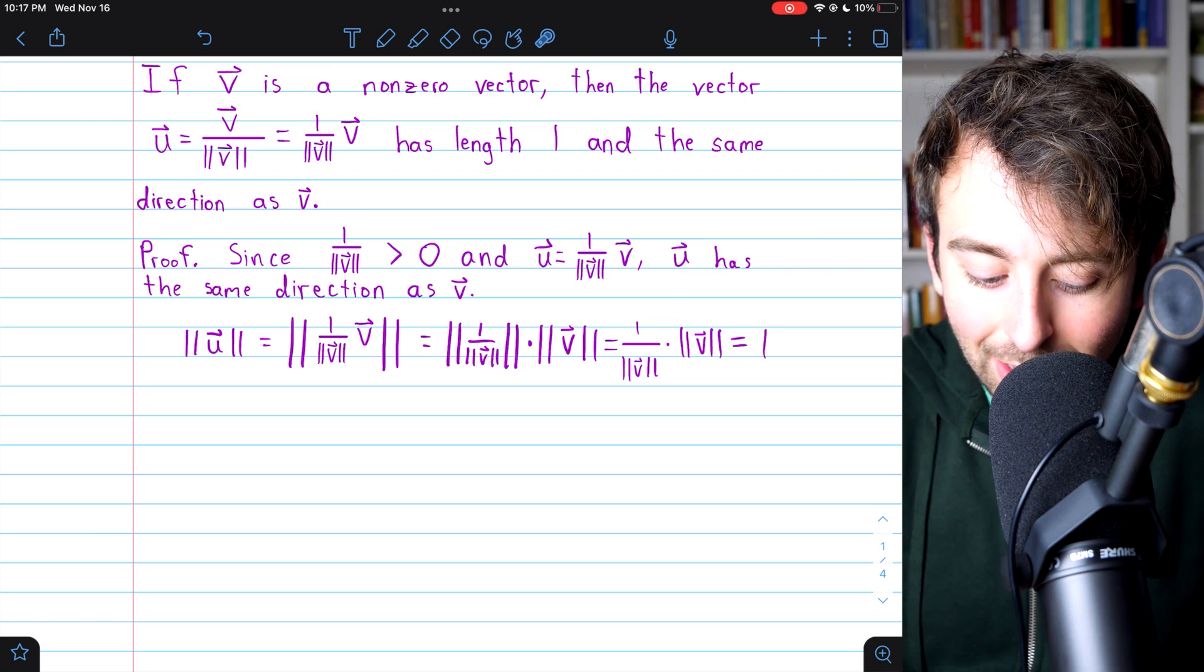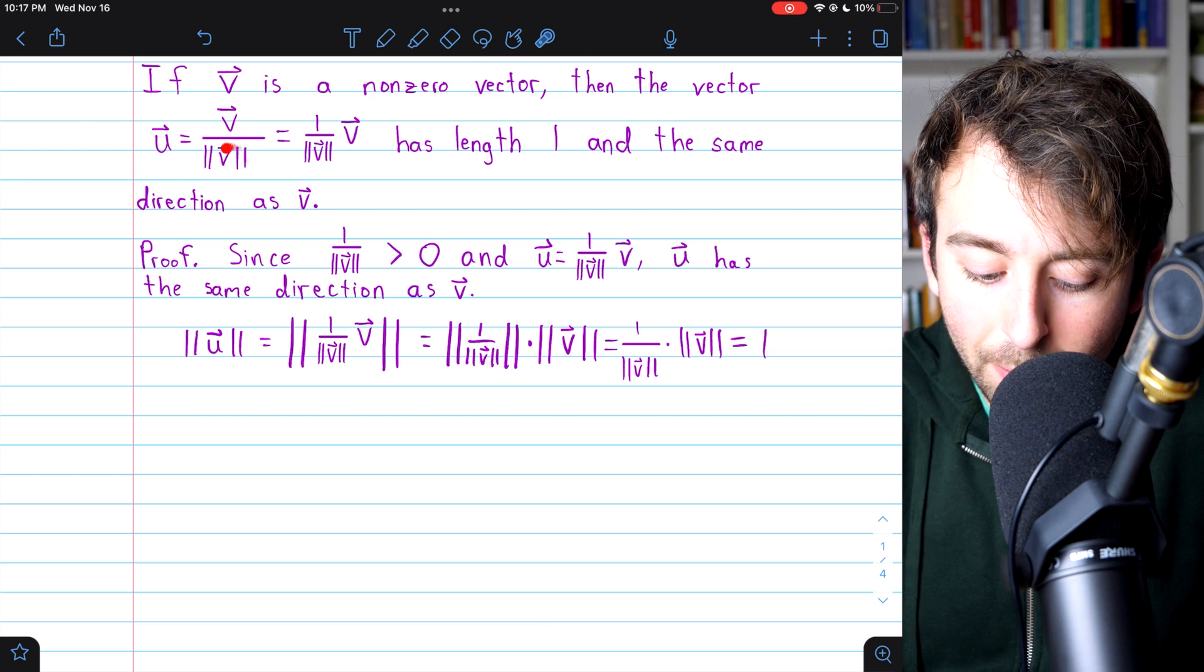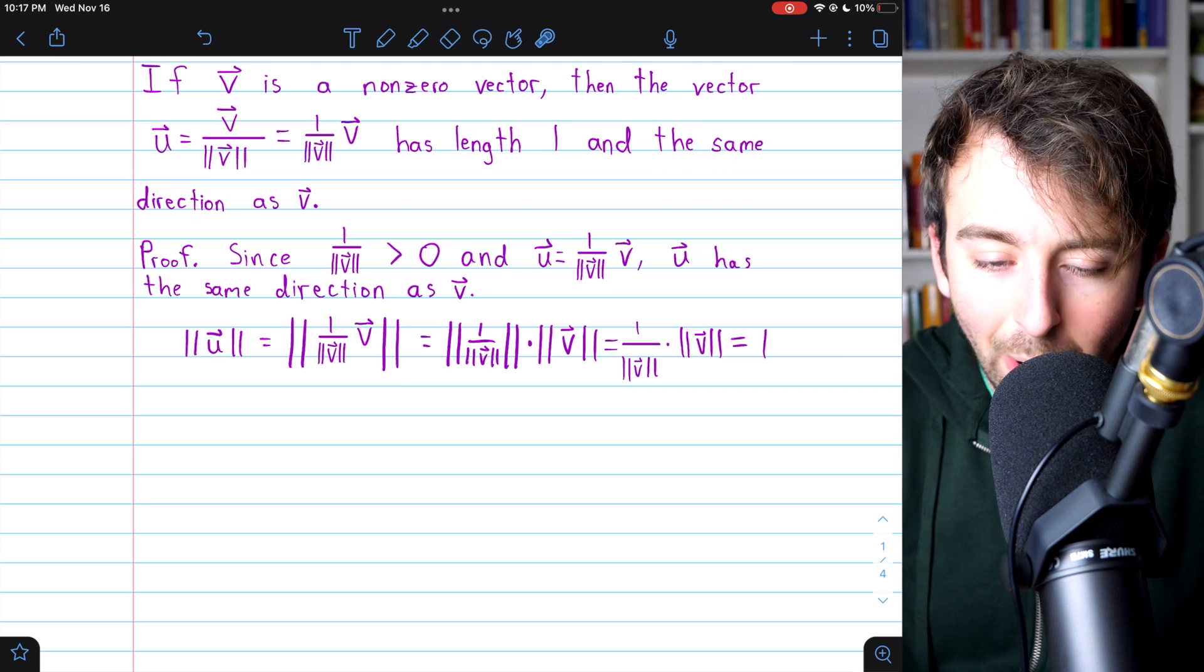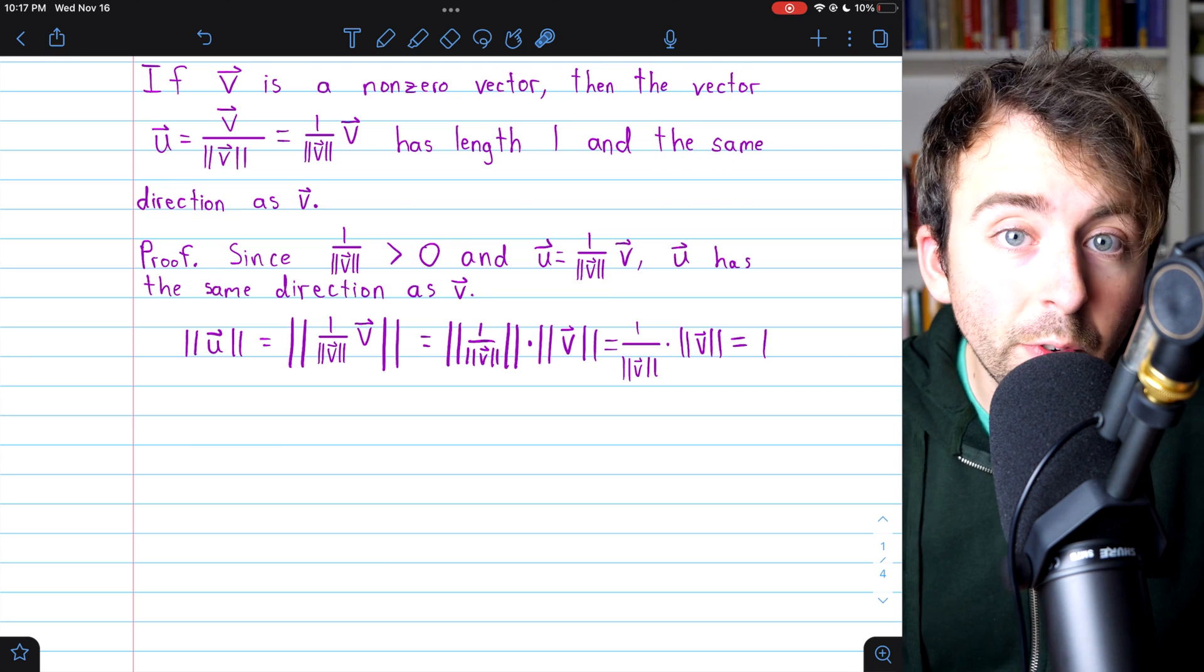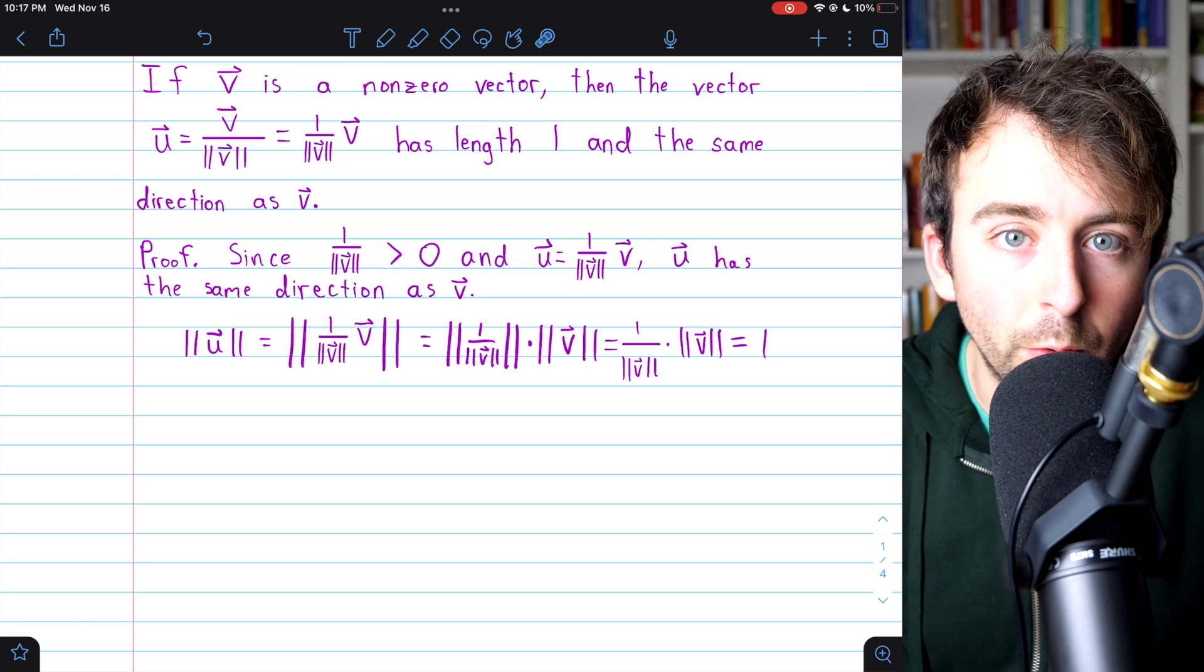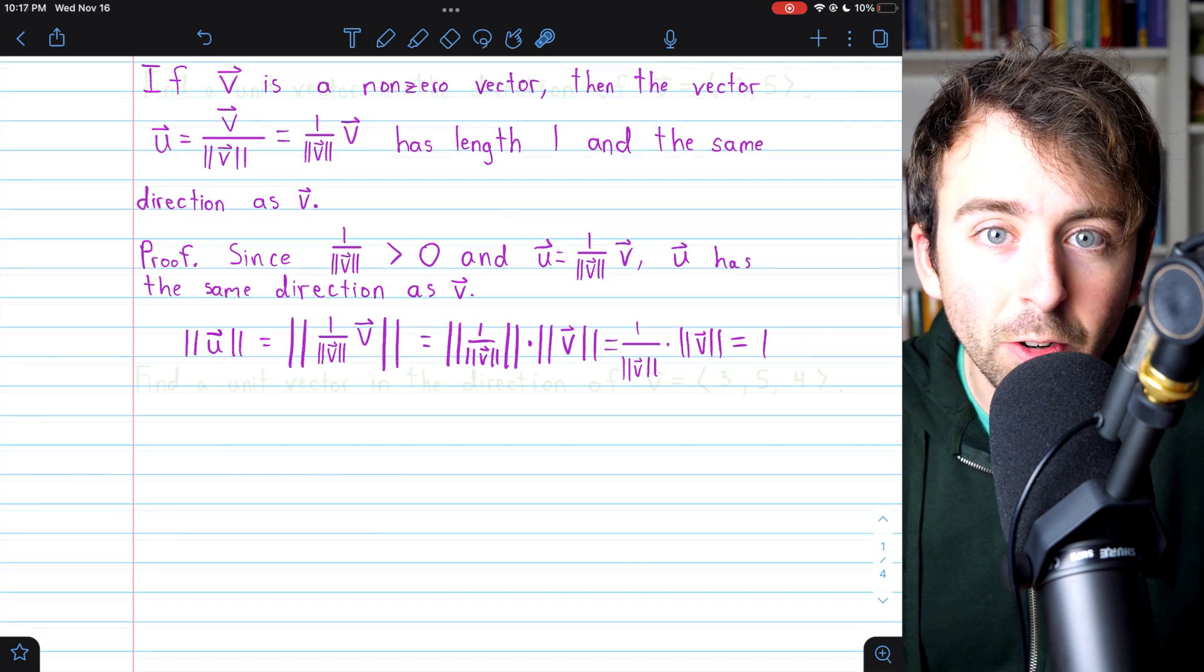So, indeed, this vector u, which says we just take v and divide by its magnitude, this is a vector of length 1 and with the same direction as v. So, this is how we find the unit vector in the same direction as a given vector v. Now, let's go through a couple examples of doing this type of calculation.